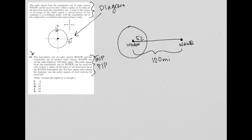If the radius for WGGW is 52 miles, then the distance from the outside edge of that radius toward the center of WGWB is a total of 48 miles.